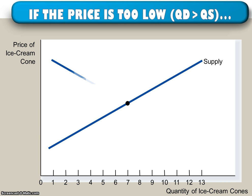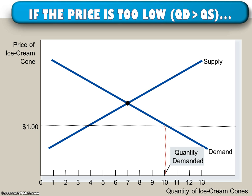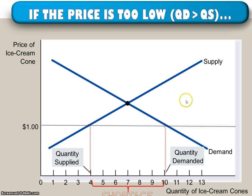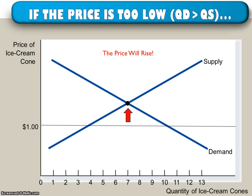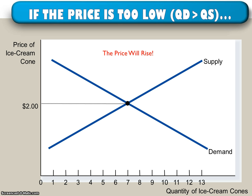On the other hand, if the price begins at a point that's too low, we end up with a shortage, meaning the quantity demanded is greater than the quantity supplied at that low price. There are going to be people who want to buy the item and can't because there's not enough available. That's going to cause the price to rise in the market up to the equilibrium. When there's a shortage, the price gets bid up in a market economy. Markets are always going to end up at their equilibrium position.